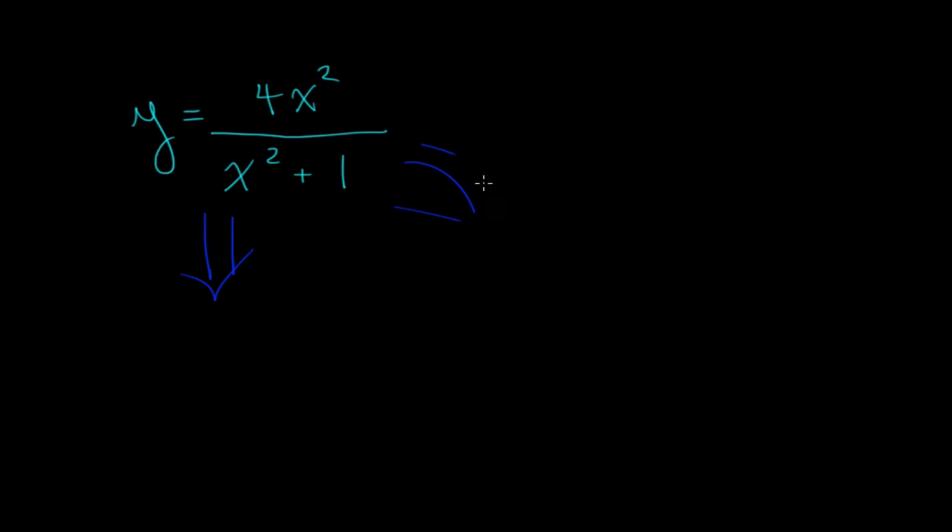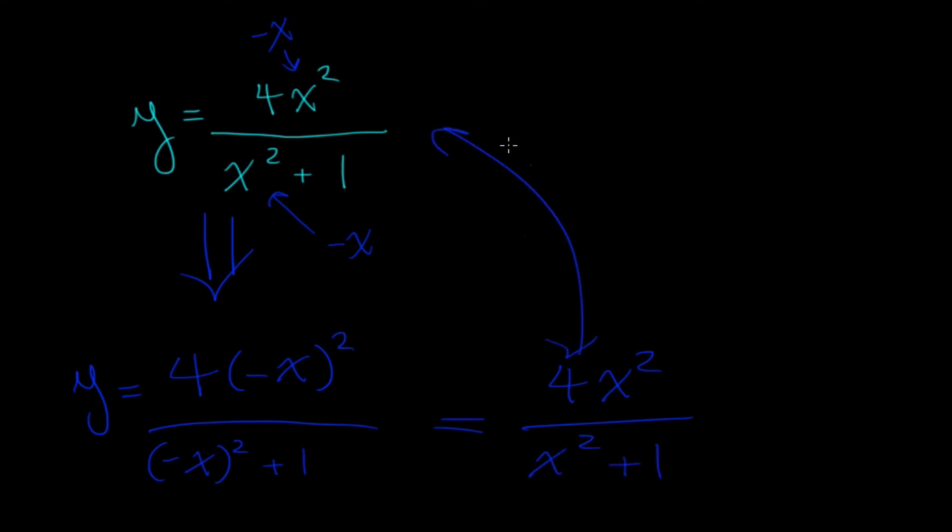So now let's plug in negative x. Oh, not for y. We're plugging it in for all instances of x. So negative x here, negative x here. And we get y is equal to 4 times negative x squared over negative x, oops, negative x squared plus 1. And this, because we have even exponents here and here, that cancels out the negative, because the negative times itself is a positive. So we get, we still get 4x squared over x squared plus 1. And that is, the resulting equation is the same as the original equation.